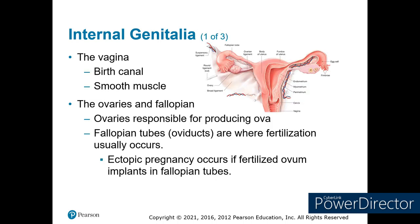The internal genitalia consists of the vagina, which is the birth canal. It's a smooth muscle, able to expand and contract as needed to facilitate delivery. The ovaries and fallopian tubes provide the starting point for pregnancy. The ovaries develop the ovum, which is released into the fallopian tubes, where fertilization typically occurs, and the ovum will then travel to the uterus.